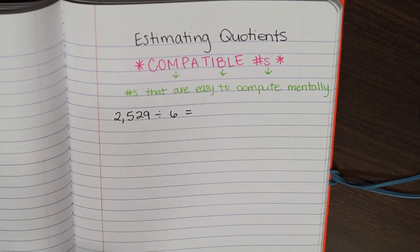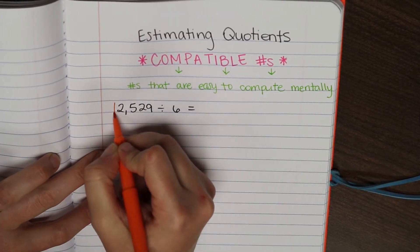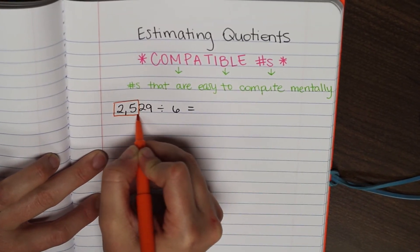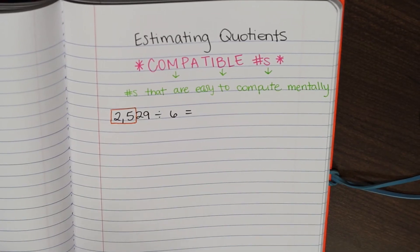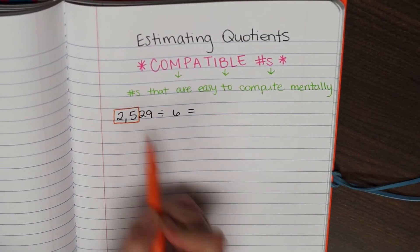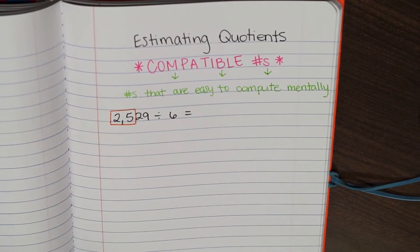So the first thing I want you to do is to put a box around your first two digits of your number. Okay? This number is called the dividend. So we're going to box the first two digits of our dividend.